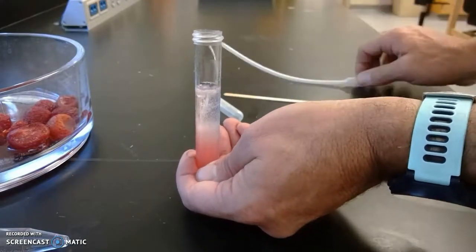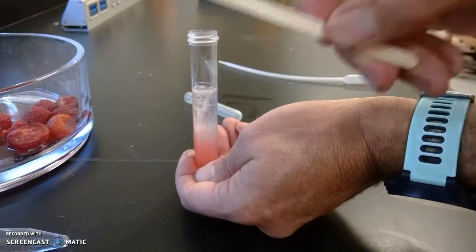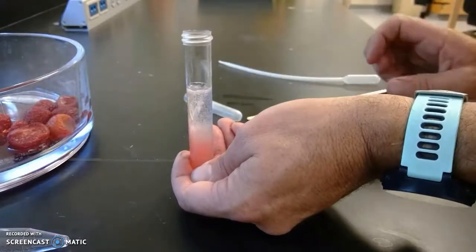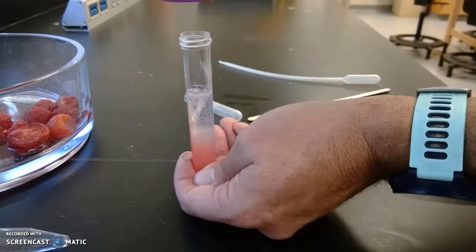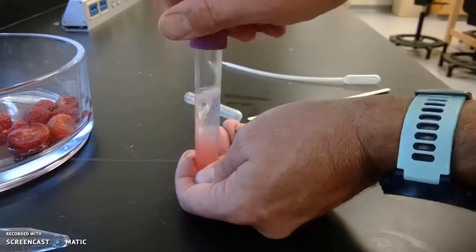For cleanup, the transfer pipette, the bag, the stirring stick, and the cheesecloth go in the garbage. Everything else goes in a bucket in the back of the lab room.